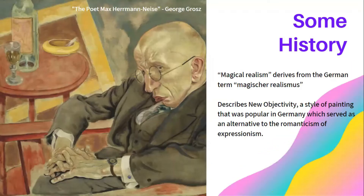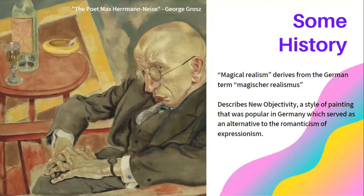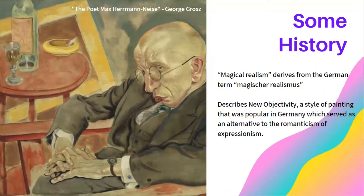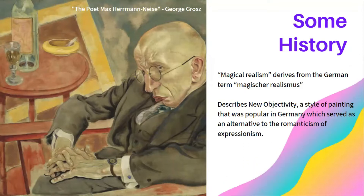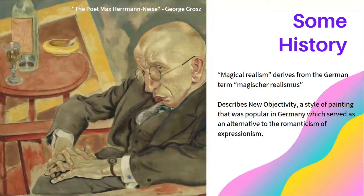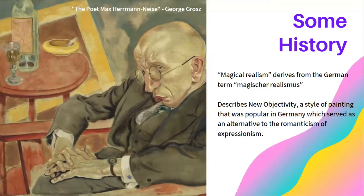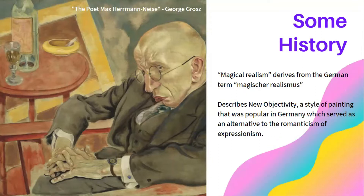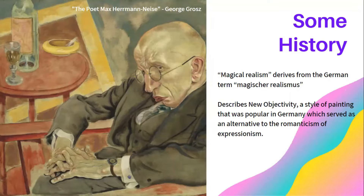I want to look a bit at the history of magical realism. The origins of the term derive from the German term Magische Realismus — please pardon my German — which was used to describe new objectivity, a style of painting that was popular in Germany, which served as an alternative to the romanticism of expressionism. The image here is an example of a new objectivist painting.